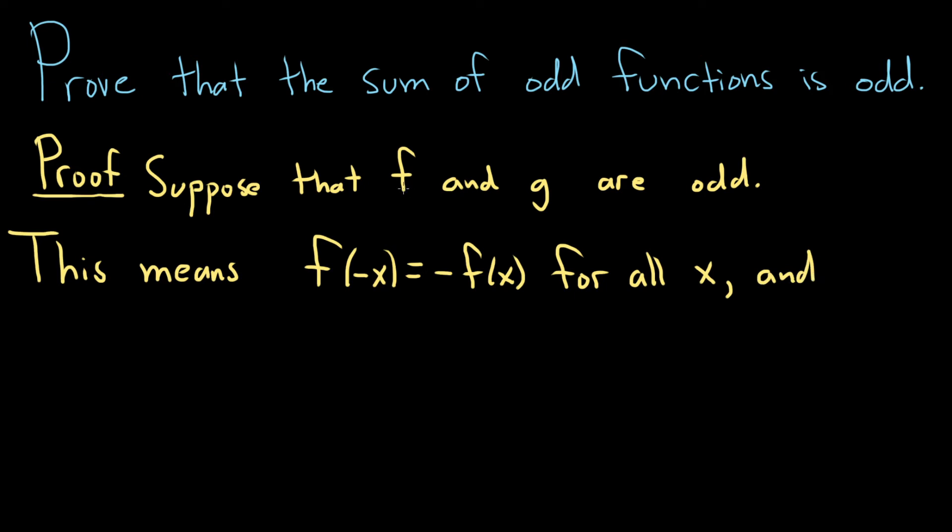We're also assuming that g is odd. This means that g(-x) = -g(x), and again, this has to be true for all x.